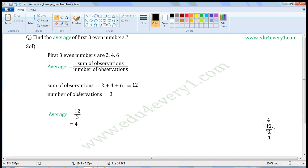Sum of observations is equal to, we have to add these numbers, 2 plus 4 plus 6. 2 plus 4 is 6, 6 plus 6 is 12. So, sum of observations is equal to 12.